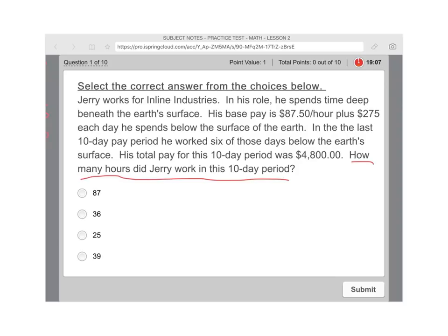Okay. So what do we know? So his base pay is $87.50. He gets $275 for each day he spends below the earth surface. In the last 10 day period, we know that was six days. So that's going to be $275 multiplied by six, gives us $1650. So he made $1650. I'm just going to put US under the surface.